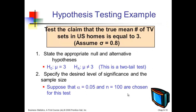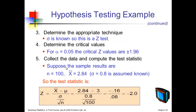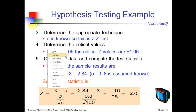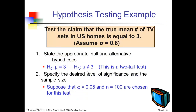So here's an example. The test claim is that the true mean number of television sets in U.S. homes is equal to 3. We're going to assume a standard deviation of 0.8. So what we're going to do is state our null hypothesis and our alternative hypothesis. We're saying that the mean is, in fact, 3. The alternative hypothesis is it's not equal to 3. So this is going to be a two-tailed test when it's not equal to. We simply specify the desired level — we're going to do it at 5% — and we're going to choose a sample of 100 TVs to test.